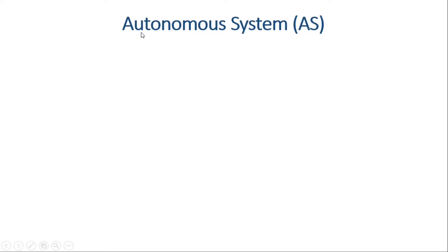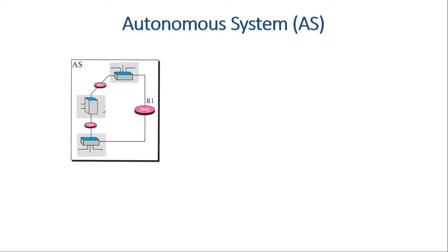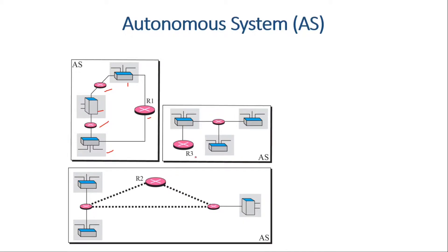Now we are going to see what autonomous systems are. An autonomous system is a group of networks and routers under the authority of a single administration. As you can see here, we have a collection of routers and networks under the authority of a single administration. Let us look at another autonomous system — again a collection of routers along with networks, all under a single administration.